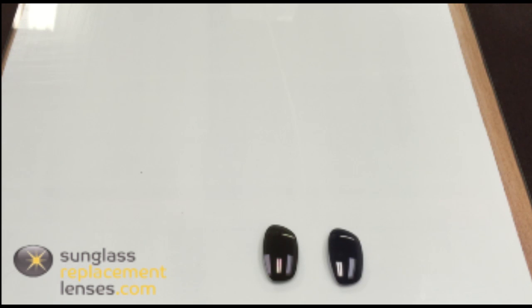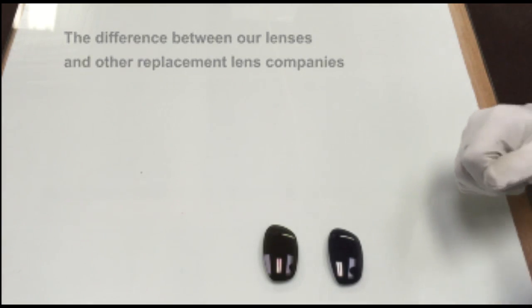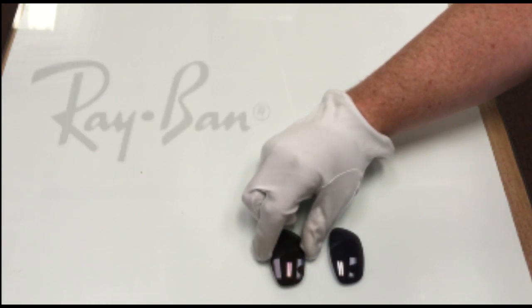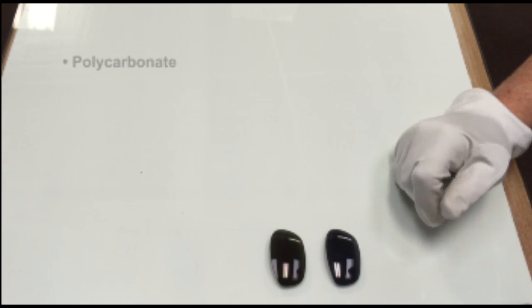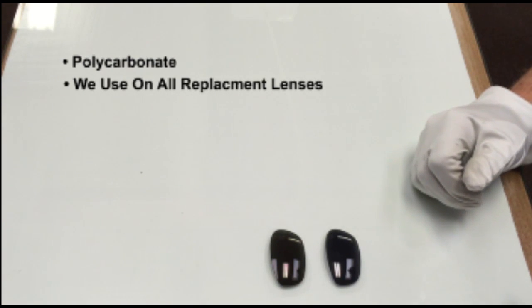Hey guys, just wanted to briefly talk about some of the main differences between our aftermarket lenses and some of our competitors' lenses. So today I have two lenses here for the same model of sunglass, which is actually a Ray-Ban. The original lens that comes in this particular Ray-Ban is a polycarbonate material, which is what we use on all our sunglasses.